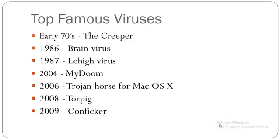After the Brain virus, we had the Lehigh virus in 1987. It was the first memory-resident file infector that attacked all executable files, taking control when a file was opened and whenever it was closed. Later on, we also had the Jerusalem virus.